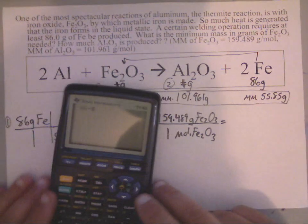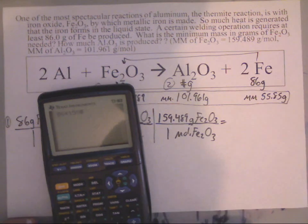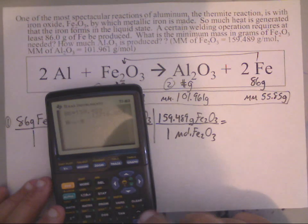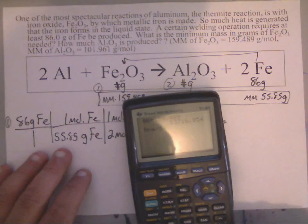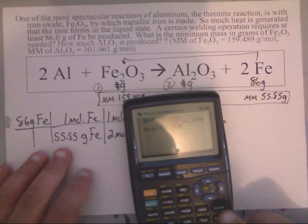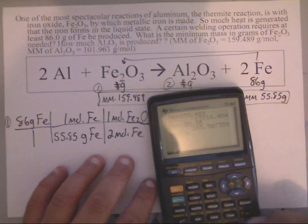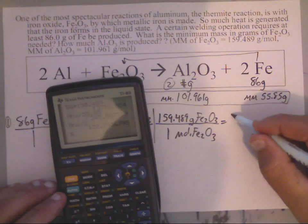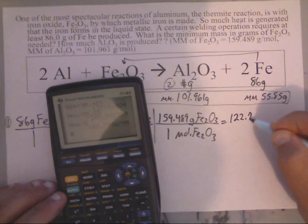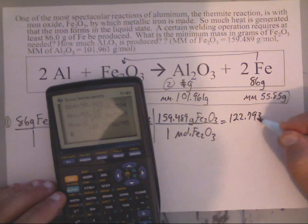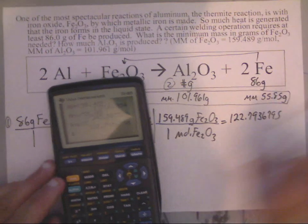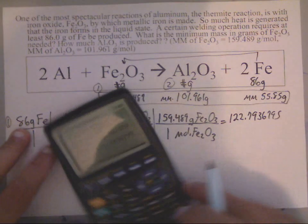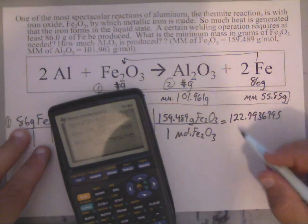You punch it in: we have 86 times 1 times 1 times 159.489, and that's going to be divided by 55.85 and divided by 2. When I do that, I end up getting 122.79367795. Now sig figs, I only had two sig figs.